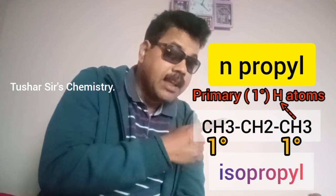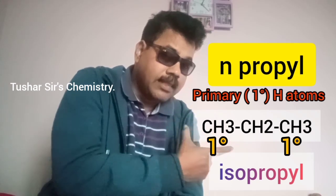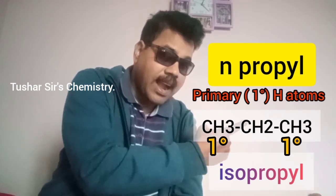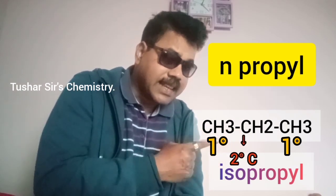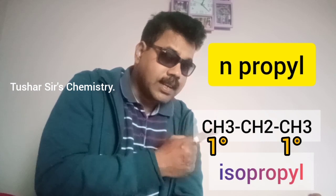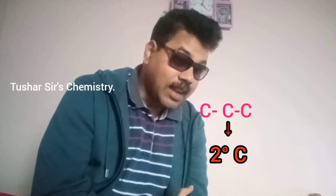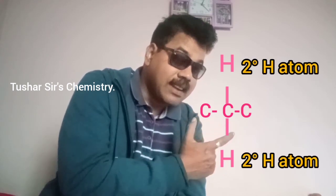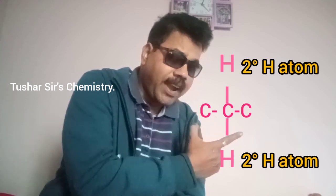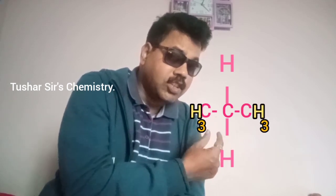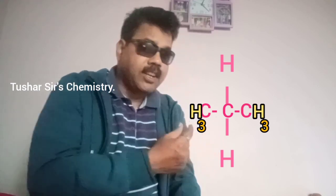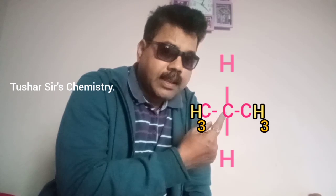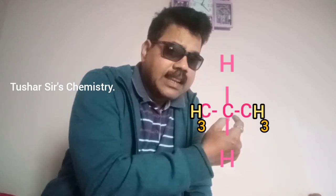The hydrogen atoms attached to primary carbon atoms are primary hydrogen atoms. In case of propane, there are two primary carbon atoms — the first one and the last one. In the middle, you will find a secondary carbon atom, because that carbon in the middle is connected to two carbon atoms on two different sides. The hydrogen atoms attached to the secondary carbon atom are secondary hydrogen atoms. So in case of propane, you'll find six primary hydrogen atoms and two secondary hydrogen atoms.